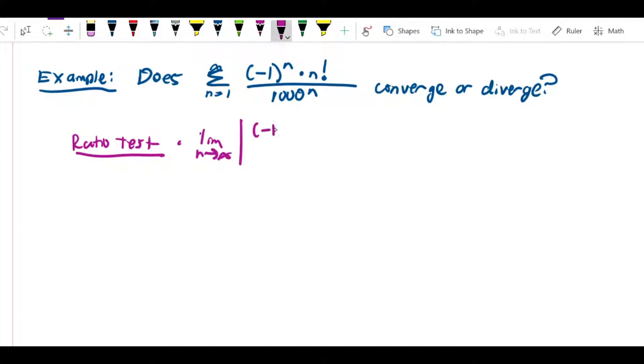So this is going to be negative 1 to the n plus 1 times n plus 1 factorial over 1000 to the n plus 1.